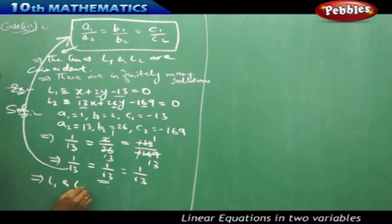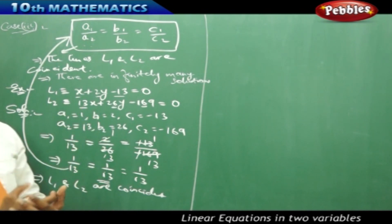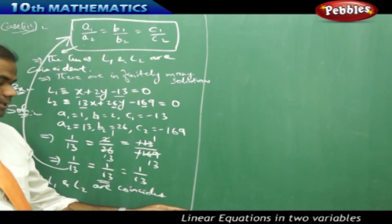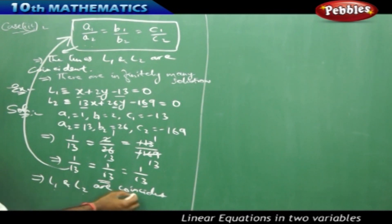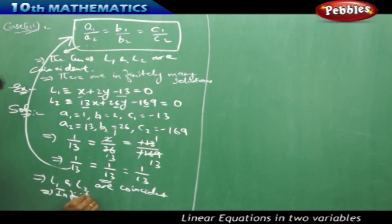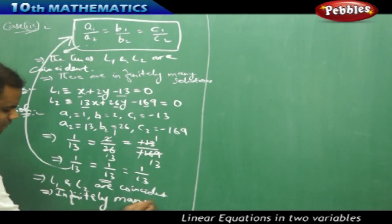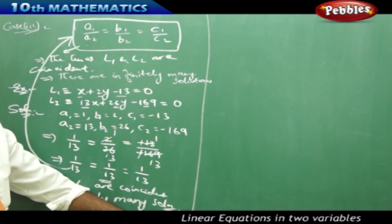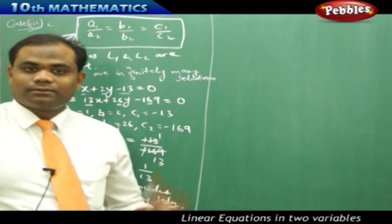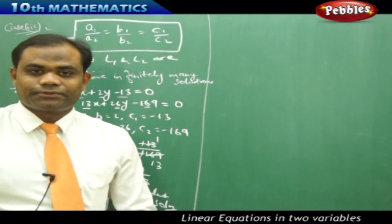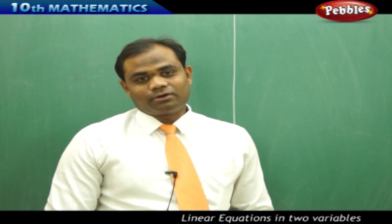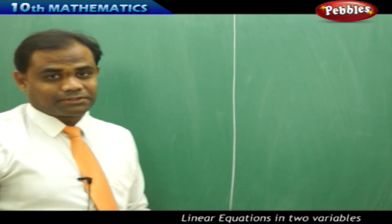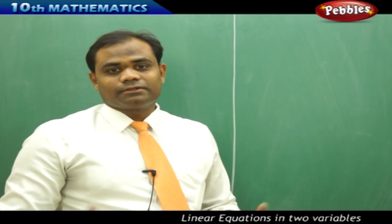L1 and L2 are coincident, meaning the two lines lie one over the other — this is Case 3. Therefore infinitely many solutions exist. This is how we understand Case 3 connected with the nature of solutions.